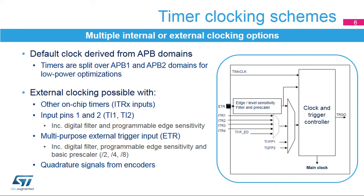The timer features multiple clocking options. The default clock comes from the reset and clock controller, linked to one of the APB clock domains. The various timers are shared on two APB domains — typically one high-speed APB and one low-speed APB — to limit current drawn by peripherals. External timer clocking allows counting of external events or externally adjusted counting periods. The clock source can be provided by other on-chip timers using one of the four internal trigger inputs, ITR1 through ITR4. Input pins 1 and 2 can also serve as external clocks, with optional digital filters to remove spurious events.